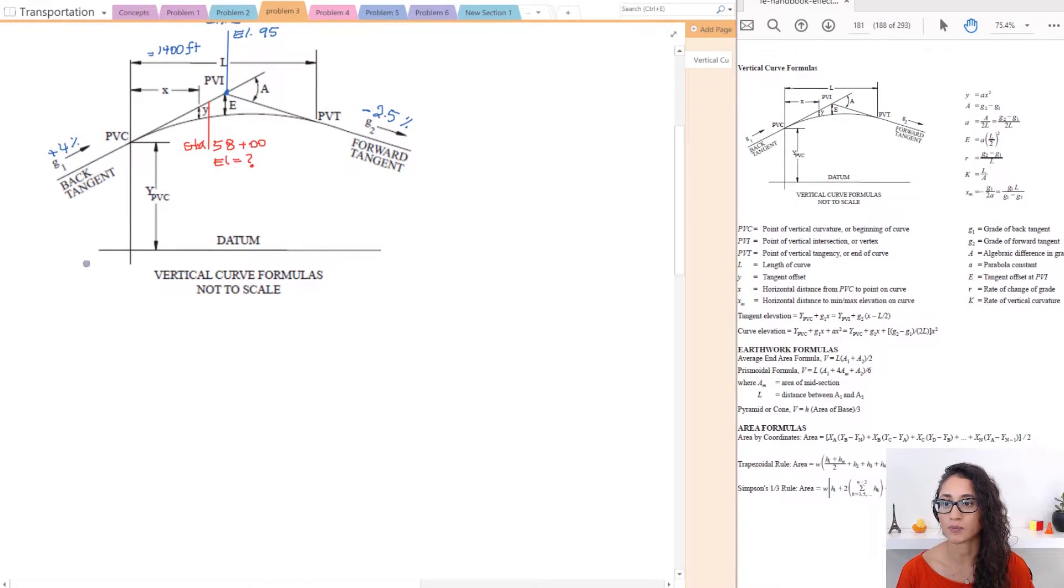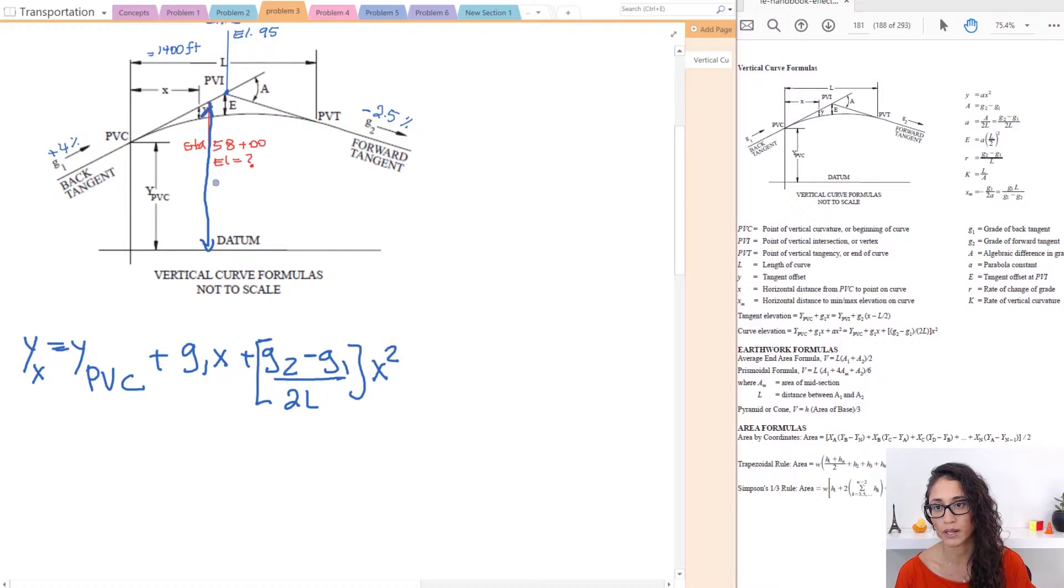Okay so let's start by writing the equation down. So we have Y, let's call it X instead of 58 because it's too long so let's just denote it as X, is equal to Y PVC plus G1 times X plus G2 minus G1 divide that by 2L and this whole term is multiplied by X squared. So let me just make it clear, this is the elevation we're looking for, this right here, so this is YX.